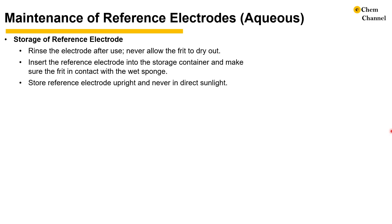To properly store reference electrodes, rinse the electrodes with a proper solvent after use and never let the fluid dry out. For aqueous electrolytes, the solvent will be water; for non-aqueous electrolytes, use a clean solvent that is miscible with your electrolyte. After rinsing, insert the reference electrode into the storage container and make sure the frit is in contact with the white sponge. Store the reference electrode upright and away from direct sunlight.